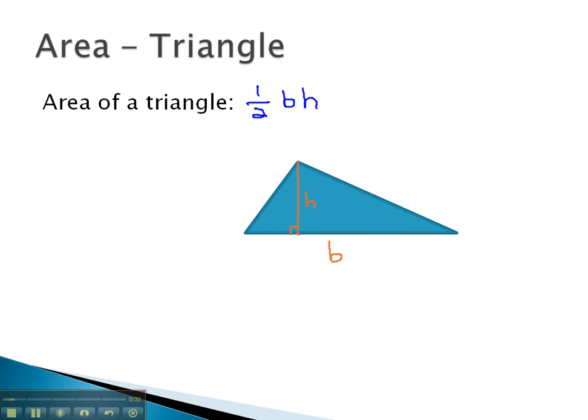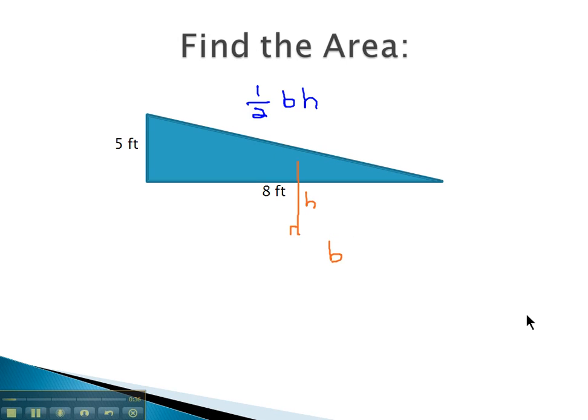Let's see if we can use this formula to find the area of some triangles. In this first example, we are given two measurements, and what's nice is we see those two measurements do meet at that perfect corner or right angle, 90 degrees.